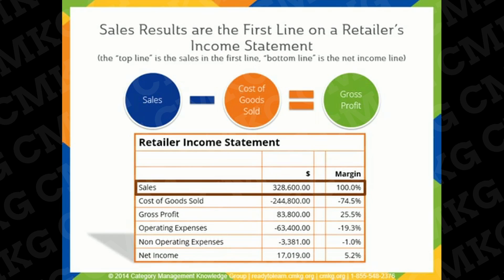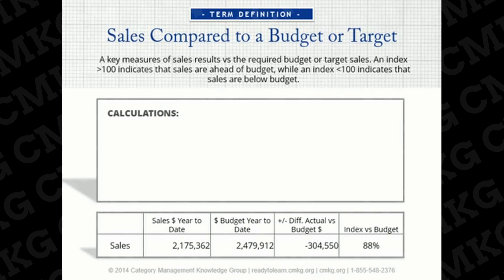Sales results show up on the first line of the retailer's income statement. Even though a company's bottom line, or net income, gets most of the attention from investors, the top line is where the revenue or income process begins. Achieving sales targets or budgets is another important measure that relates to sales for category managers. Category managers are usually given their targets by senior management, and these targets collectively equal the total sales target for the retailer. They need to compare their targets or budgets to actual sales results on an ongoing basis.